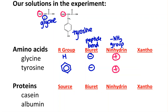The xanthoprotein test tests for the phenyl ring. For these two amino acids, tyrosine has that, but glycine does not. So we're going to expect it to be negative for glycine and positive for tyrosine.